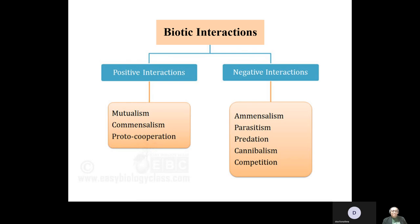Interactions may be positive or negative. When the interaction is positive, both parties benefit from the relationship; examples include mutualism, commensalism, and proto-cooperation. Negative interactions benefit one species while the other is deprived or killed in the process, and these include amensalism, parasitism, predation, cannibalism, and competition.